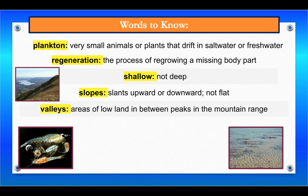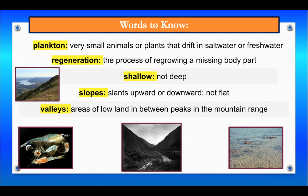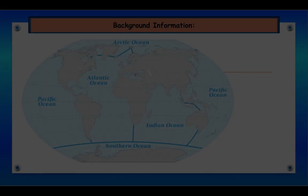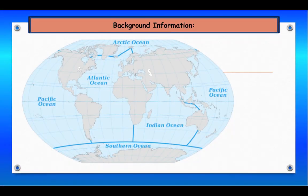Valleys are areas of low land in between two areas of high land. For example, there are many valleys between peaks in the mountain range. Remember, we've already learned about one particular salt water habitat, the Arctic Ocean.